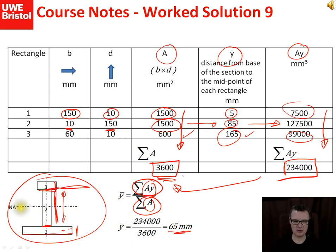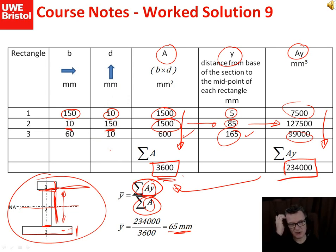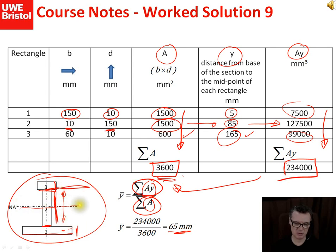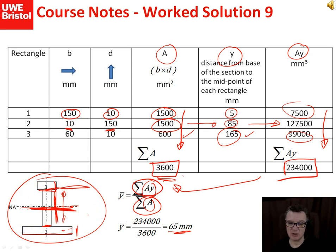Now it's good practice to put a rough sketch showing where you think the neutral axis occurs. The overall height is 170 millimeters, so halfway would be 85 millimeters - which looks about in the middle. Our calculated neutral axis at 65 millimeters seems correct - it's shifted further down toward the base, which makes sense given the geometry of this asymmetric beam.